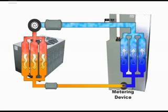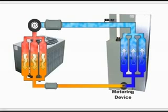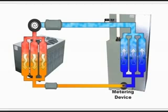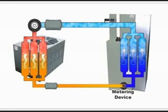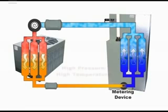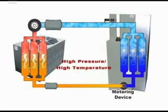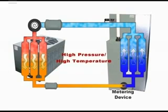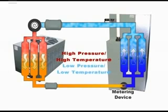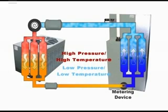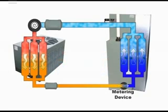To achieve this condition, we use the refrigerant's properties of high pressure/high temperature and low pressure/low temperature. By forcing the refrigerant through the metering device, a drop in pressure occurs, resulting in a significant lowering of the temperature of the refrigerant.